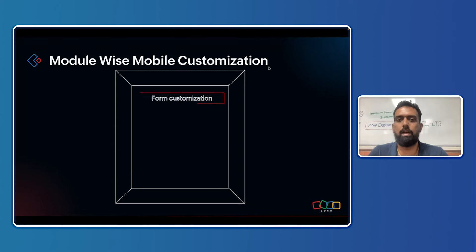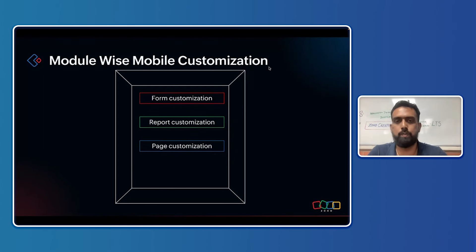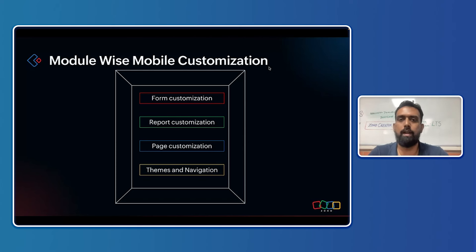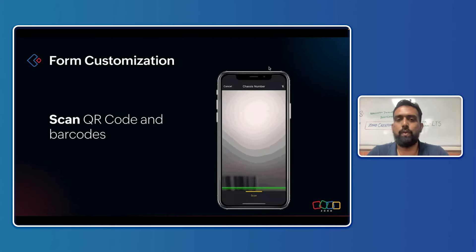Now let's look at the module-wise mobile customization options. Modules in Zoho Creator include forms, reports, and pages — each has specific mobile customizations. You also have themes and navigation options for mobile applications where you can change themes and navigation specifically for mobile without affecting the web application. They work independently.